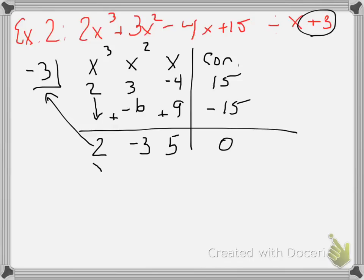Now we have to put the variables back into this answer that's in the bottom row. But again, we start with 1 less degree than our original polynomial. So we started with an x³. So now we're going to label with an x², then an x, then the constant, and then the last number would be the remainder. So our final answer is 2x² - 3x + 5.